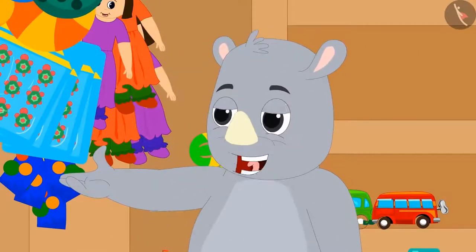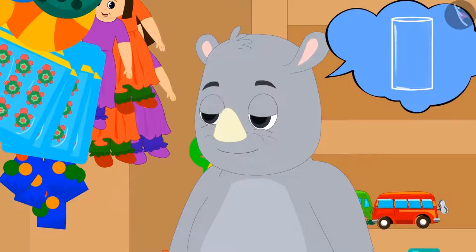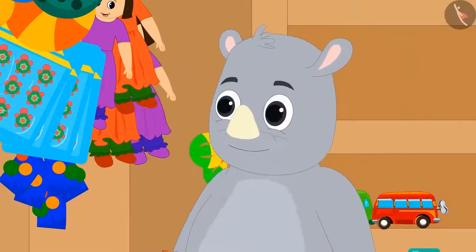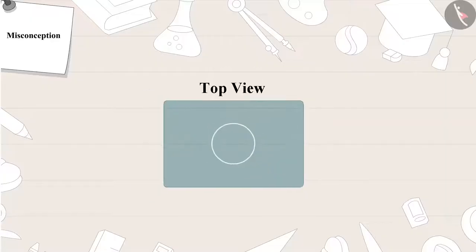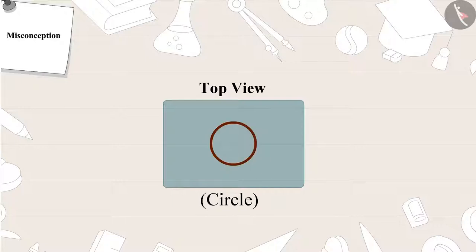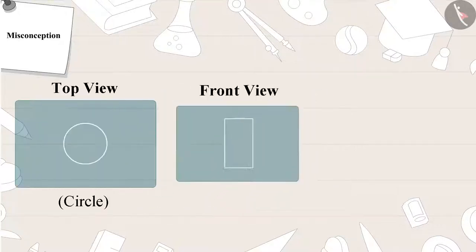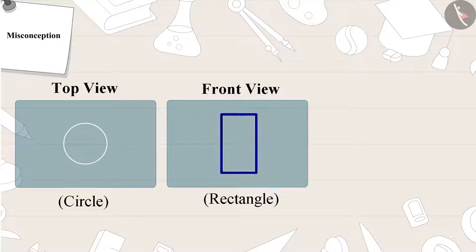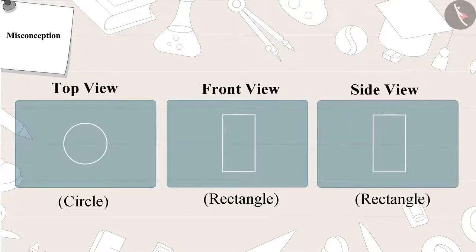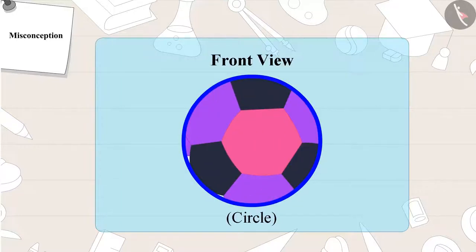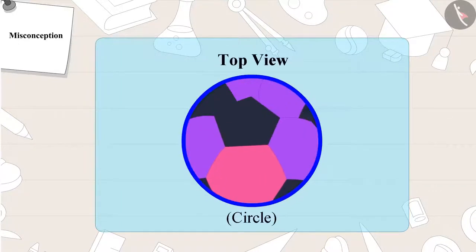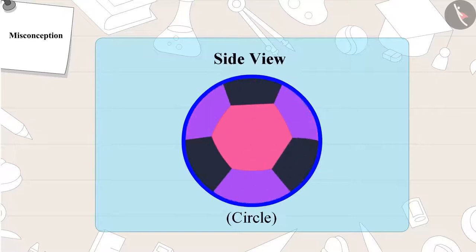This is so easy. It is a tumbler. This is a wrong answer, Gagu ji. A glass is a circle only in top view. It is a rectangle in front view and a rectangle in the side view as well. The correct answer is a ball. A ball is a circle in front view, top view, as well as side view.